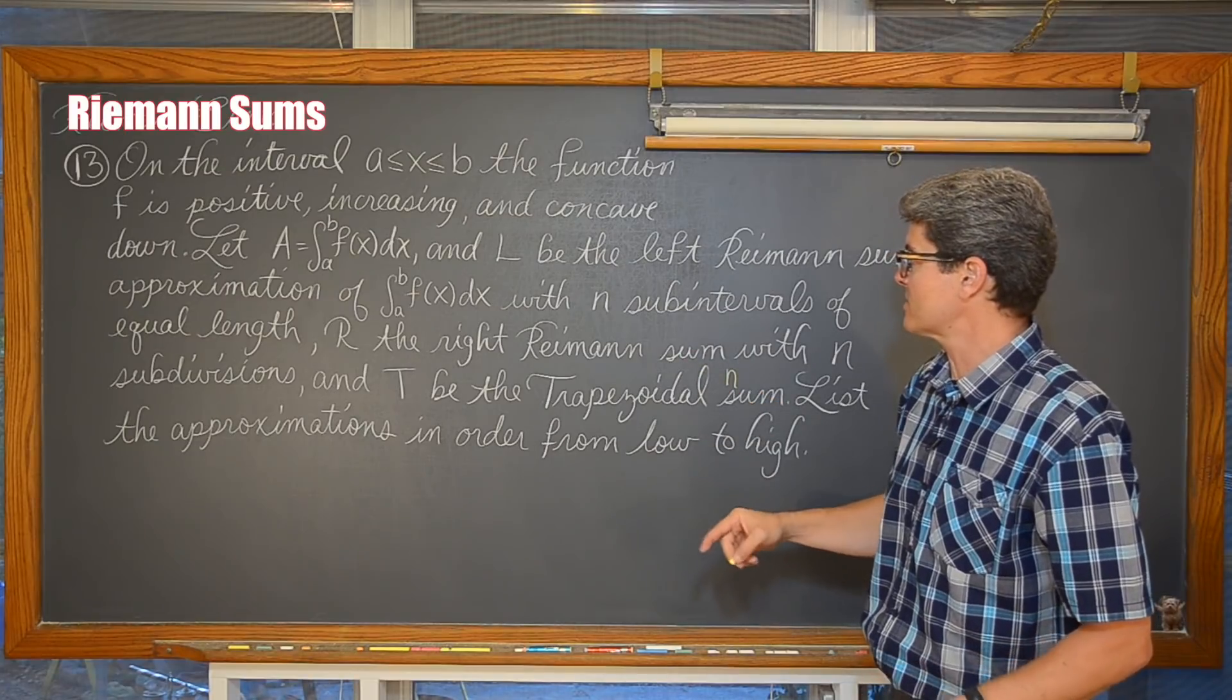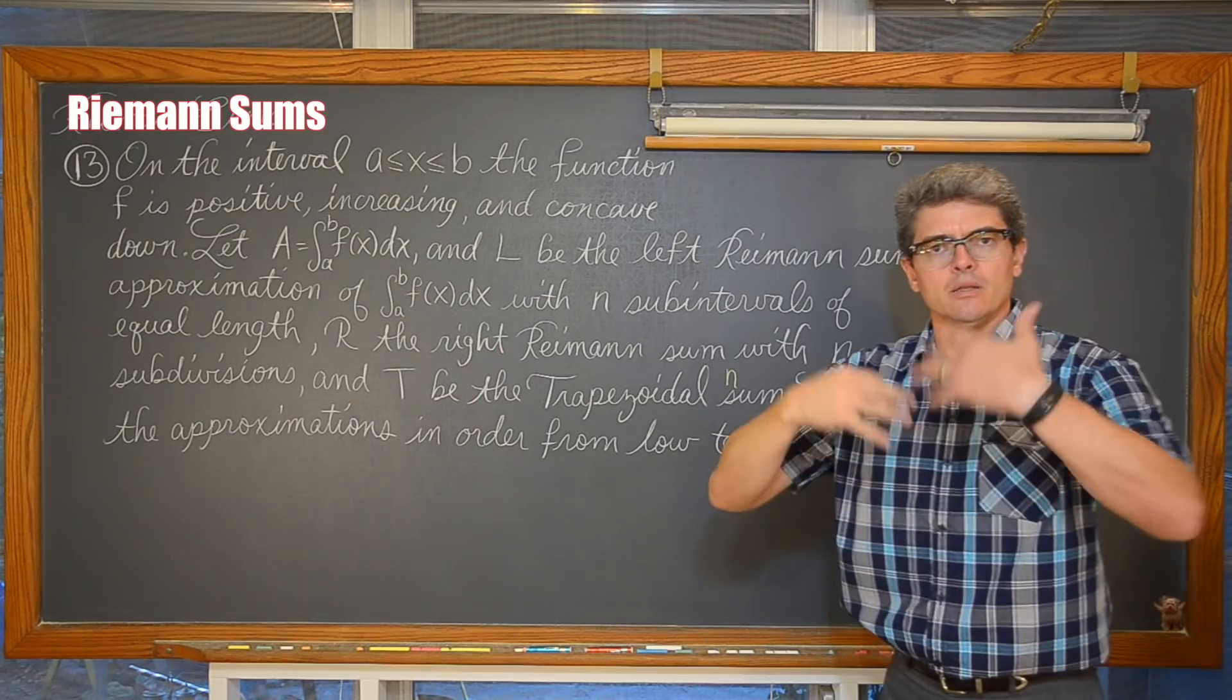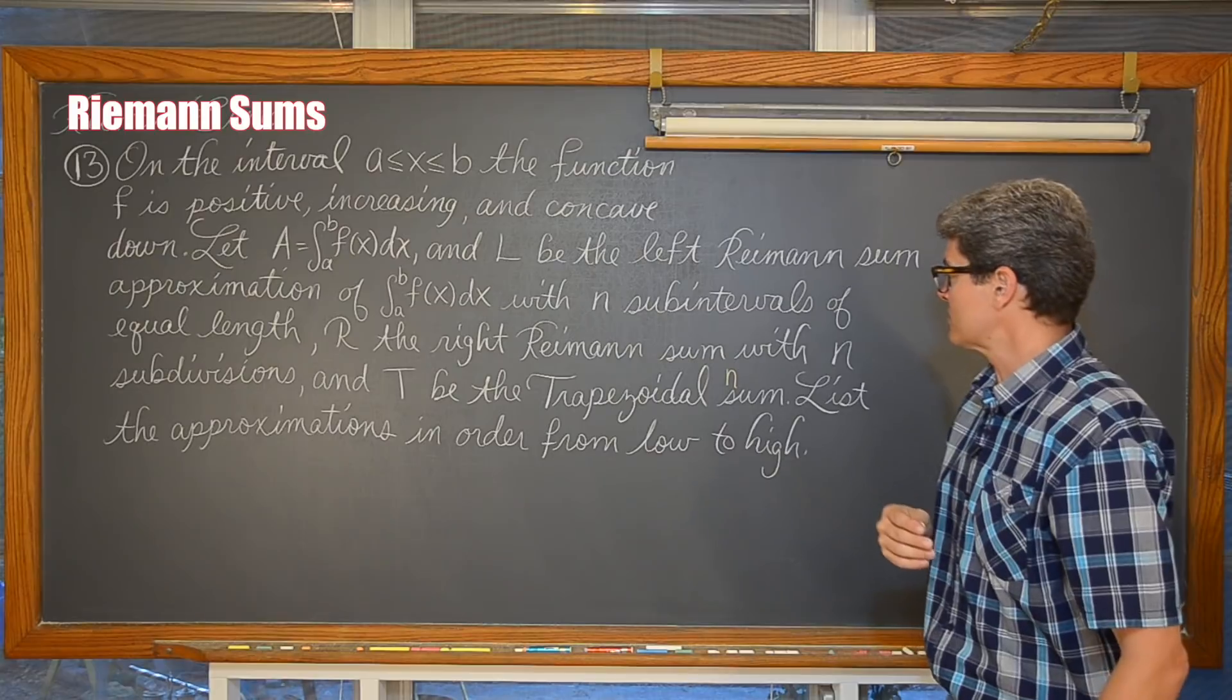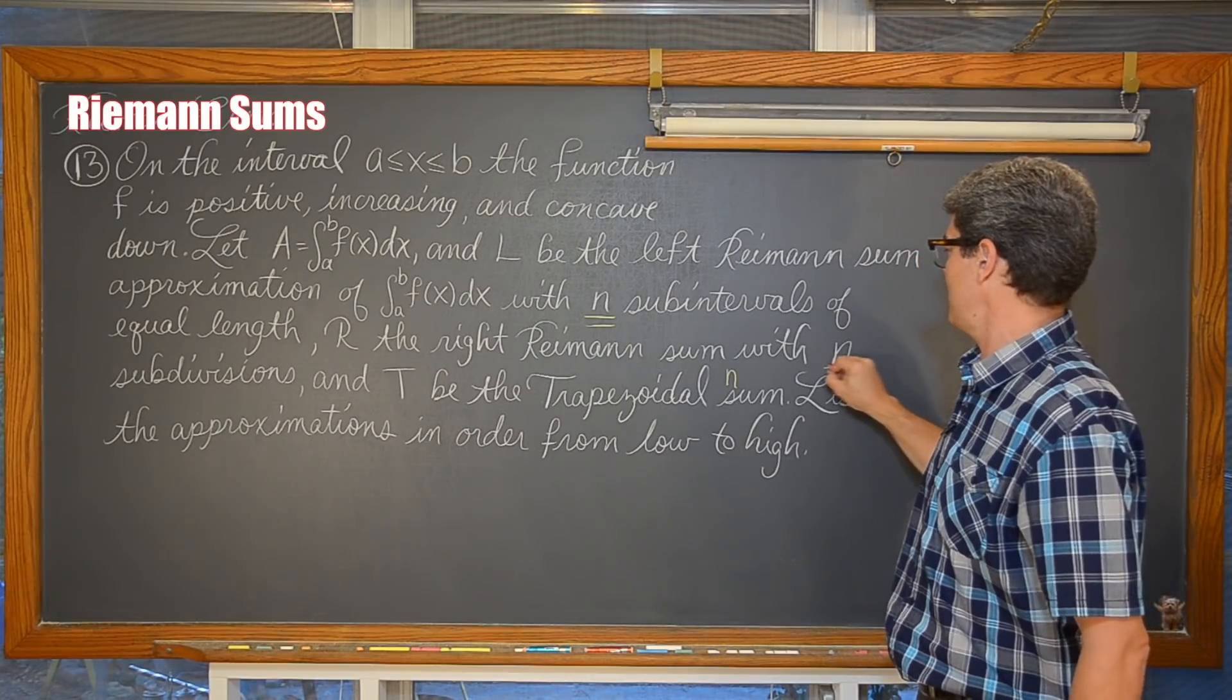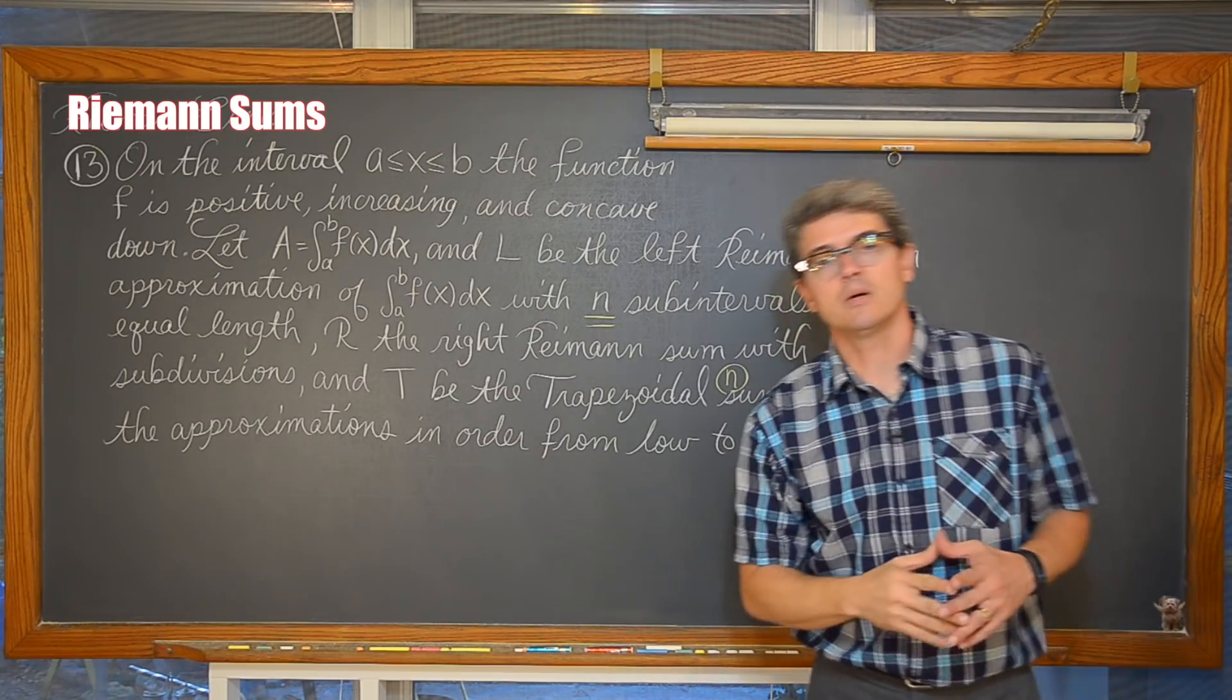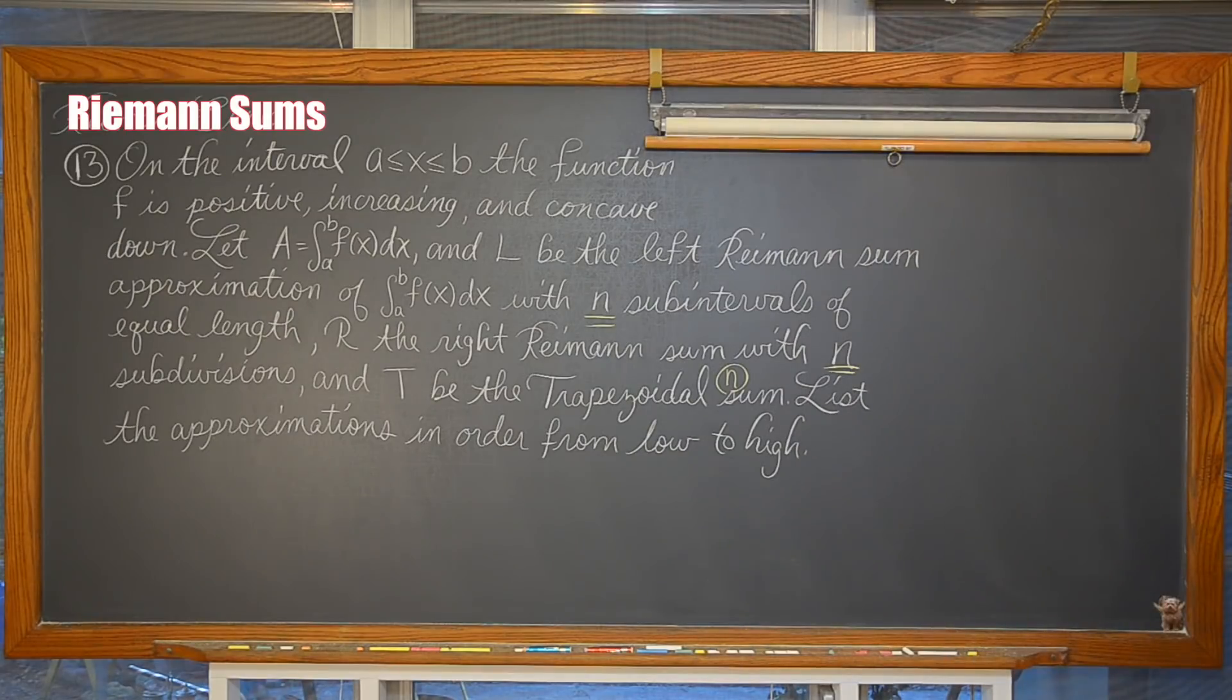That is key there, that for each of these approximations, left, right, trapezoidal, and then using these to estimate the actual value of this definite integral. I want that actual value in our list of values from low to high. It is very important that we note that each of these Riemann sums has the same number of sub-intervals.